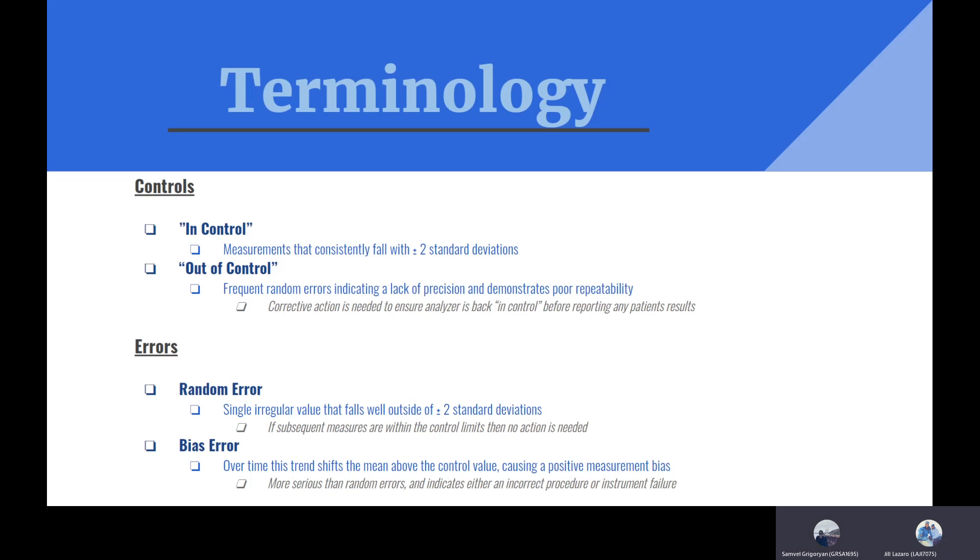When we go into calibration, we are looking at certain terminology that are specific for ABG analyzers. One of the first terms is control. There are two types of controls: in control and out of control. In control is what we want - measurements that are consistently falling within two standard deviations of our mean, staying within the lanes as it should.